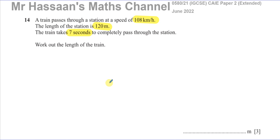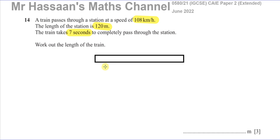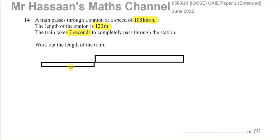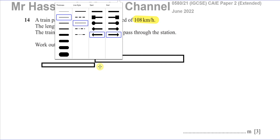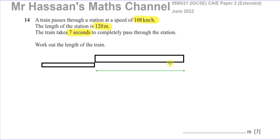The first issue is to think about the situation. Suppose you have the station — there's a platform — and you have the train approaching the station. This is the train, and that is the station. When the train approaches, it's going to pass completely through the station. The distance it needs to travel includes the length of the station itself, which is this length here — 120 meters.